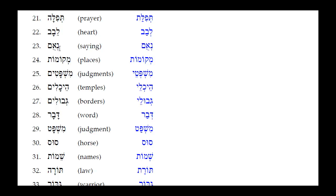Number twenty-one: Ne'um — for 'saying.' Ne'um is the same in both absolute and construct forms. Number twenty-two: Mekomot — for places. The Holem above the Tav tells us it is a feminine plural absolute. The feminine plural construct is identical — no change. There is no vowel reduction because you already have a simple Sheva and the Holem is irreducible.